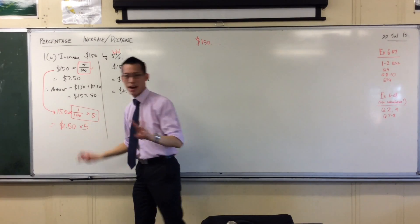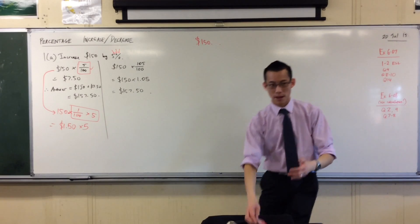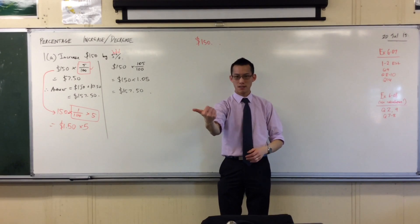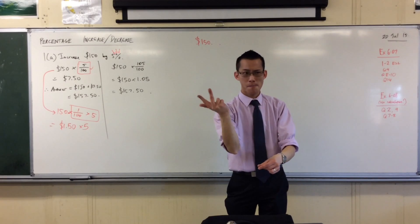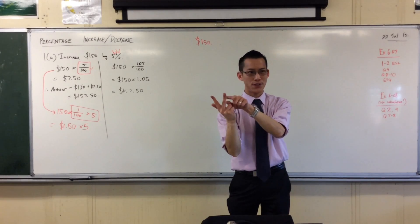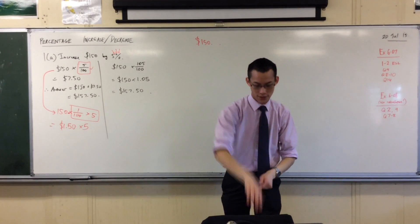Now 5 times 1.5, you could sort of do that part in your head. $1.50, $3, $4.50, help me out, what's next? Hold on, $4.50, add another $1.50, $6, and then last one, $7.50.